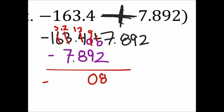13 minus 8 is 5, 12 minus 7 is 5, and then we got a 5 and a 1. So there's our answer right there, it would be negative 155.508.